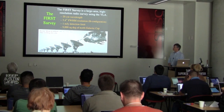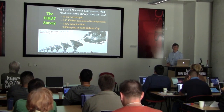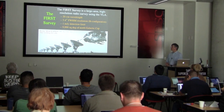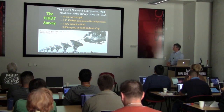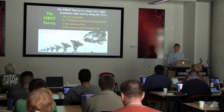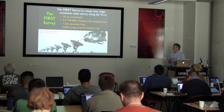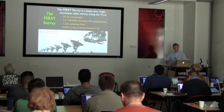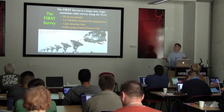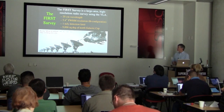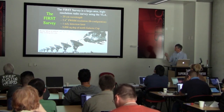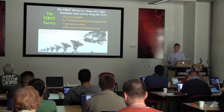The survey has a resolution of 5.4 arc seconds over most of its area, though the resolution changes as a function of declination. That's the B configuration of the VLA, which changes sizes by moving its antennas around. It has a 1 milli-Jansky detection limit and covers about 10,000 square degrees of the north galactic cap.